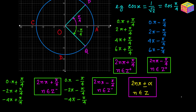So this is the general solution of cosine of x equals cosine of alpha. For that equation, the general solution of x is 2n times pi plus or minus alpha, where n is any integer — positive, negative, or 0. Let me make a quick note: this is the general solution for the equation cosine of x equals cosine of alpha, where alpha is a known given angle.